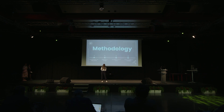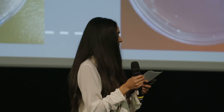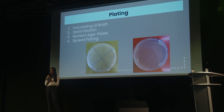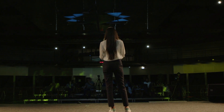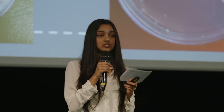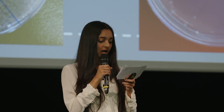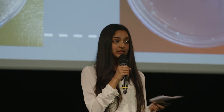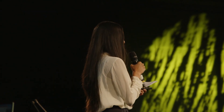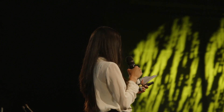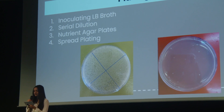The first stage of this investigation was developing a methodology. For my preliminary trials, I concluded that spread plating was the best method, so I inoculated LB broth using E. coli K12 — a non-pathogenic, lab-safe strain. I incubated this for 24 hours at 30 degrees Celsius. I then performed a serial dilution to obtain plates with easily countable numbers of colonies, which took a few trials to determine, with the optimum dilution being 10 to the negative 6.